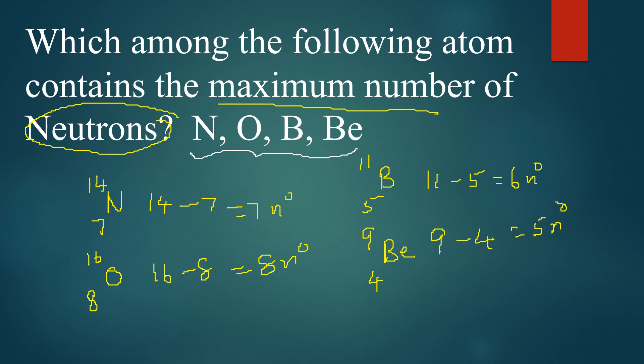So comparing: nitrogen contains 7, oxygen contains 8, boron contains 6, and beryllium contains 5 neutrons. The maximum is oxygen with 8 neutrons, so the answer is oxygen.